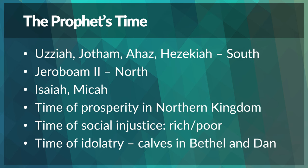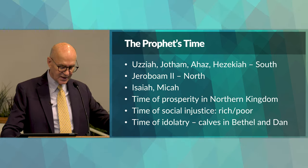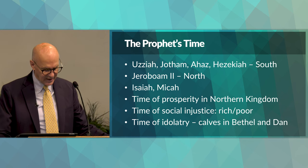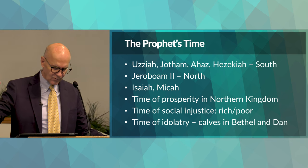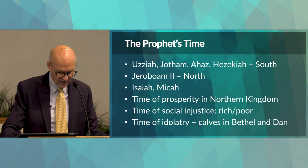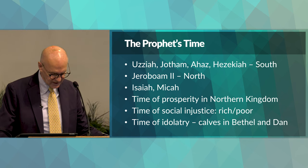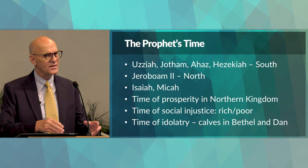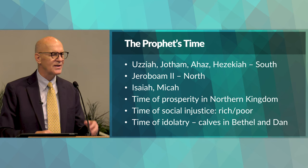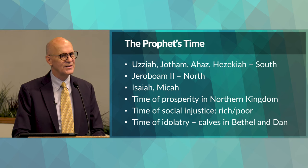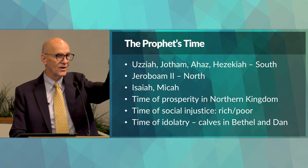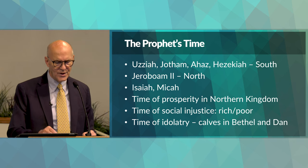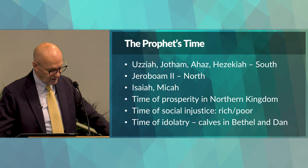Let's talk about the prophet's timeframe. Hosea lived and ministered during the period of the divided kingdom, and as the opening verse explains, his ministry lasted through the reigns of King Uzziah, King Jotham, King Ahaz, and King Hezekiah — kings of the southern kingdom. He lived and worked during the reign of Jeroboam II, king of the northern kingdom where he lived and prophesied. In those days, who was king in the north and south indicated the time period — they marked time by the reign of kings, not calendar years.